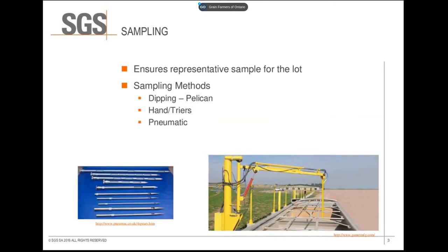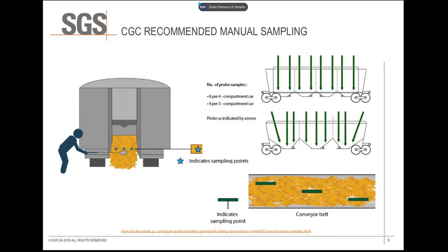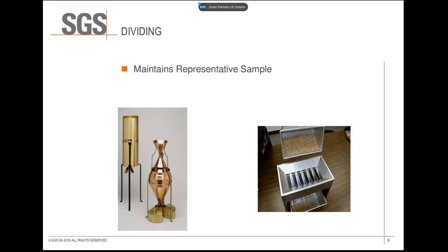Proper sampling is key to ensuring that the sample collected is representative of the load of grain. The different types of sampling are: dipping, which is a complete swath through the grain stream such as a pelican; hand probing, where the probe is inserted into a tote bag or truck until it reaches the bottom; and pneumatic probing, an automatic sampler using a vacuum system, which is what most truck probes are now. The CGC recommends trucks are probed a minimum of eight times for a single truck and ten for hopper trailers.